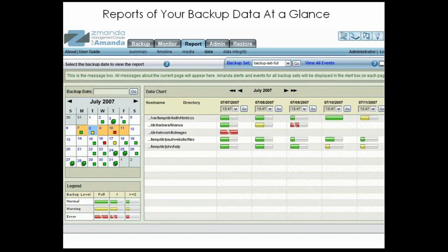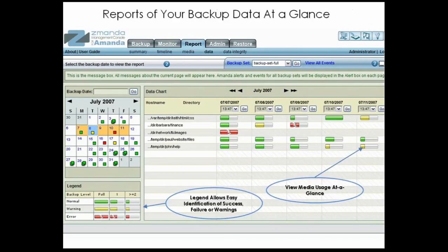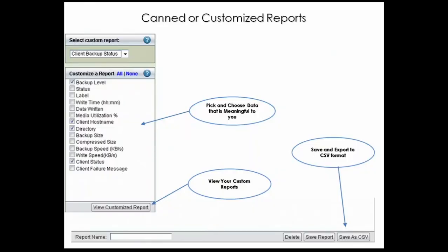The data report allows you to track the size of the data you are backing up, as well as how you are filling up your backup media. Mouse over for compression percentage and backup data size. This can be used to determine your rate of data change for fine-tuning your backups. The easy-to-read legend at the bottom corner allows you to see at a glance how your storage is being used. The custom report page allows you to slice and dice the AMANDA Enterprise statistics and present them in a way meaningful to you. Simply select the fields you are looking for, save the report for later viewing, and export data in CSV format for viewing outside of the ZMC.